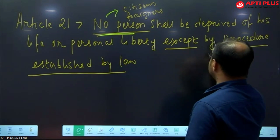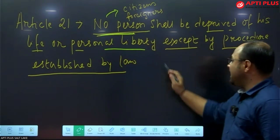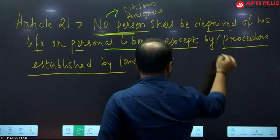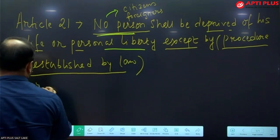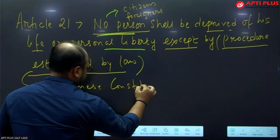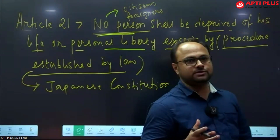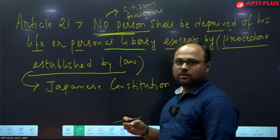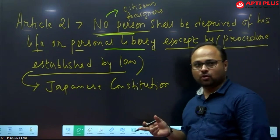Article 21 states that no person shall be deprived of his life or personal liberty except by procedure established by law. The doctrine of 'procedure established by law' has been taken from the post-World War II Japanese constitution, though some elements have also been borrowed from the UK.